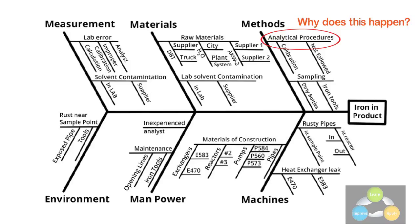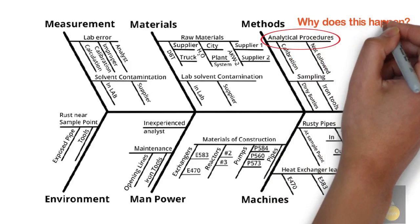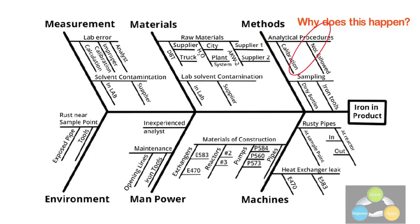Step 5: Again ask, why does this happen about each cause? Write sub-causes branching off the causes. Continue to ask why and generate deeper levels of causes. Layers of branches indicate causal relationships.